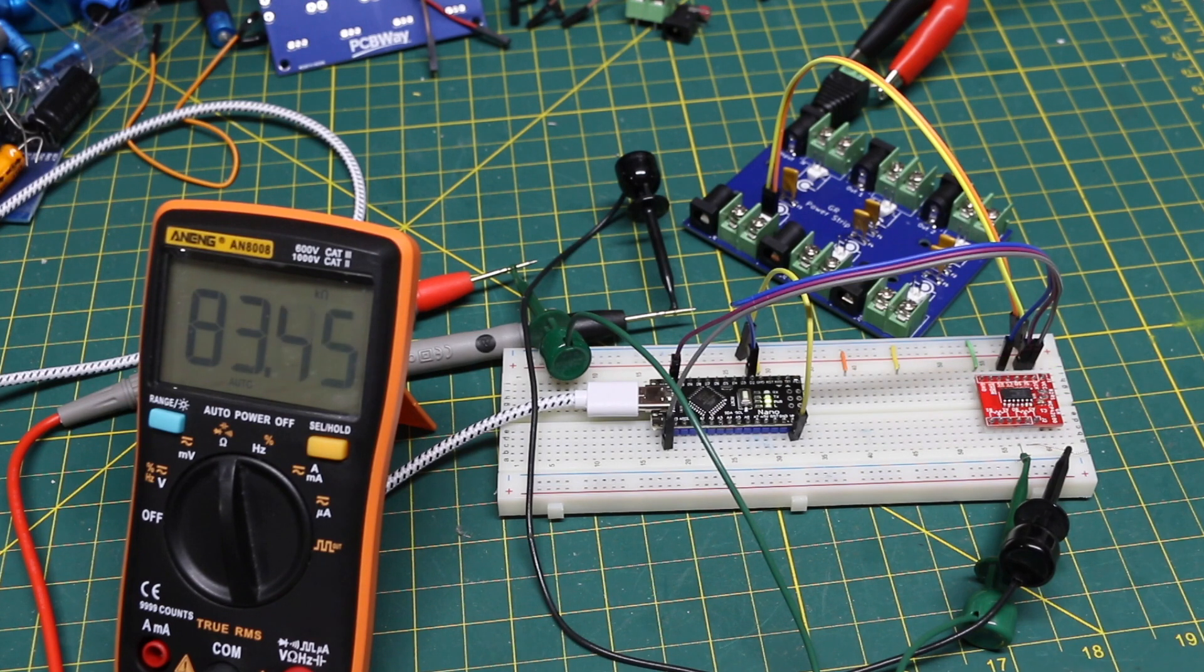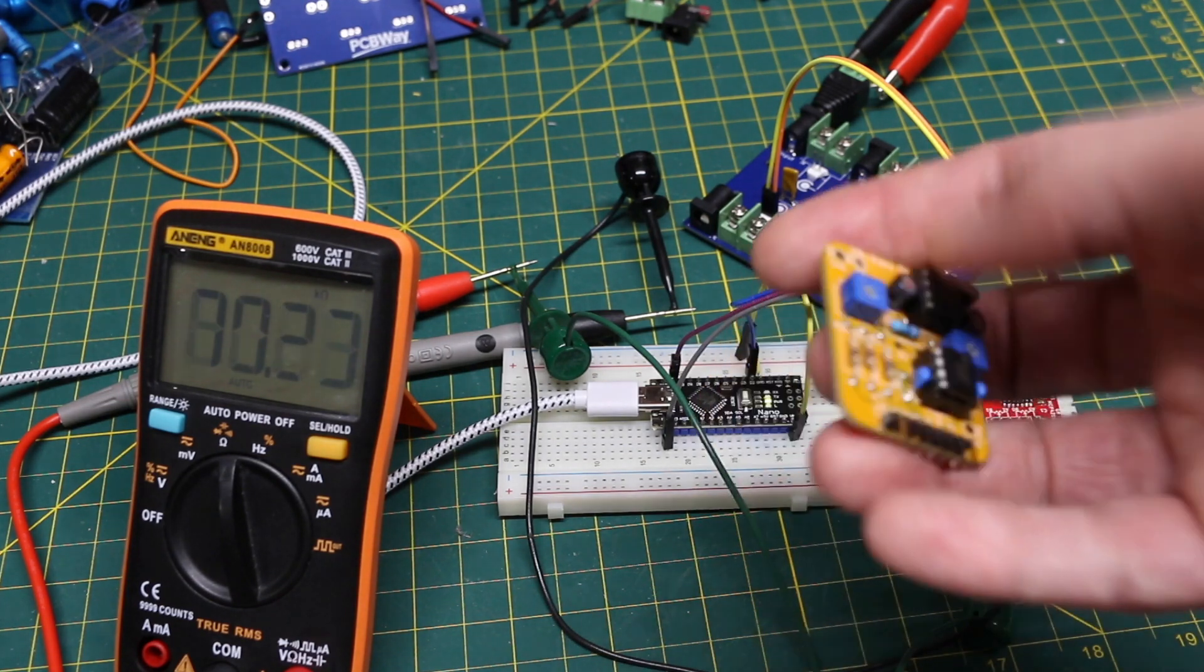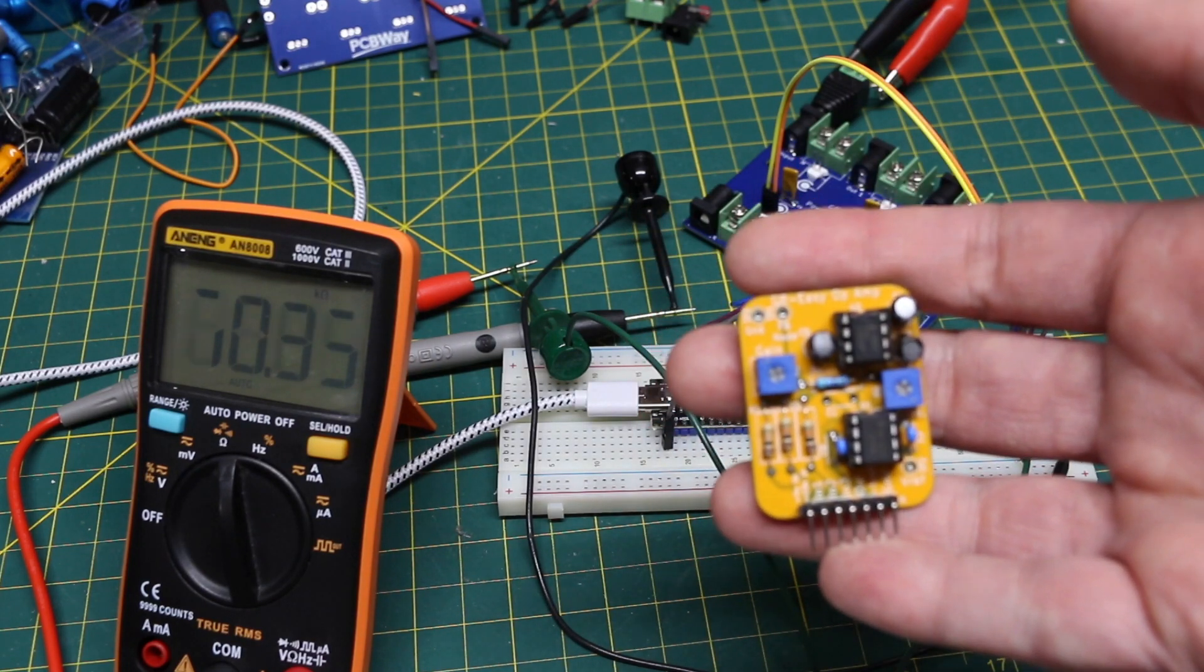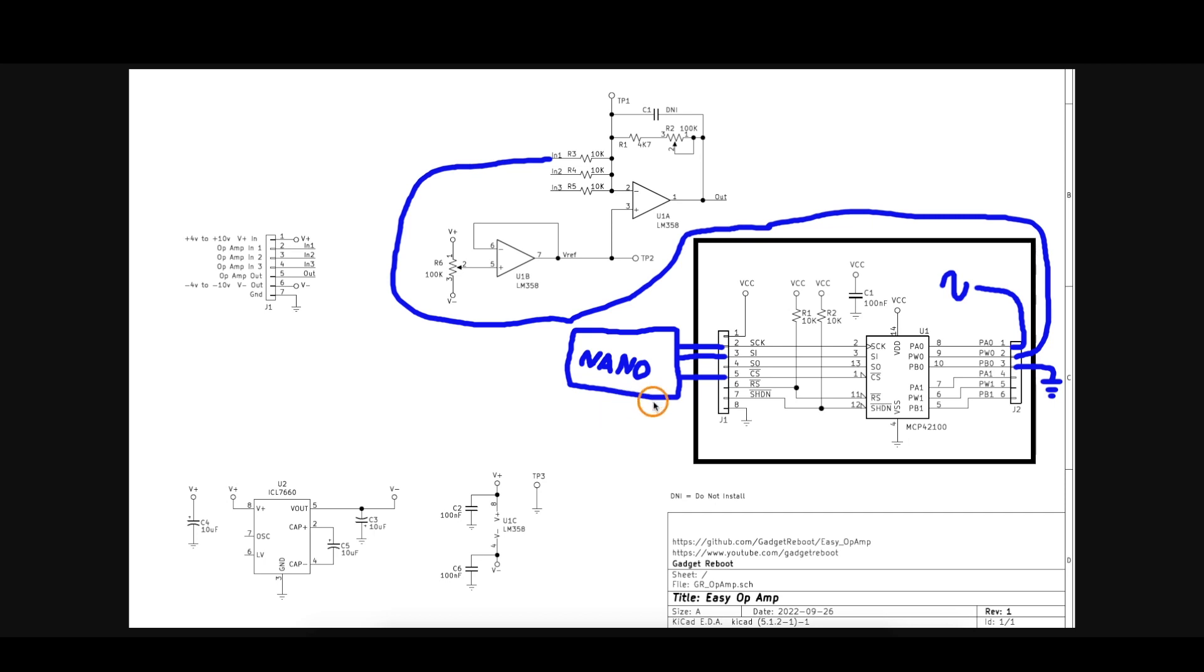What I want to do now is I want to use this op amp breakout board I made about a year ago for the next experiment. Still using the Nano as an SPI controller for the digital pot. Everything is running at 5 volts. So I'm using this easy op amp evaluation board I made a year ago, which has an op amp including a negative supply generator. So I'm going to give it plus 5 volts. The op amp is going to be powered with plus and minus 5 volts. And I'm going to leave the gain at a certain setting.